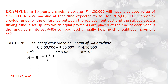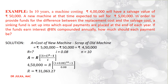Here we use the formula of ordinary annuity because the payment is placed at the end of each year. The future value A equals the annuity amount r multiplied by [(1 + i)^n − 1] divided by i. Substituting A = Rs 4,50,000, i = 0.08, and n = 10, after calculation we get the value of r = Rs 31,063.27.